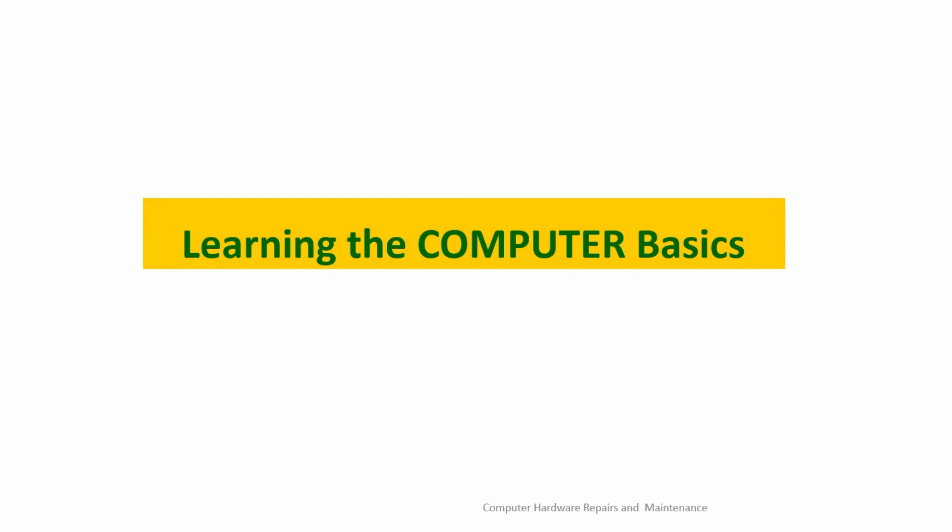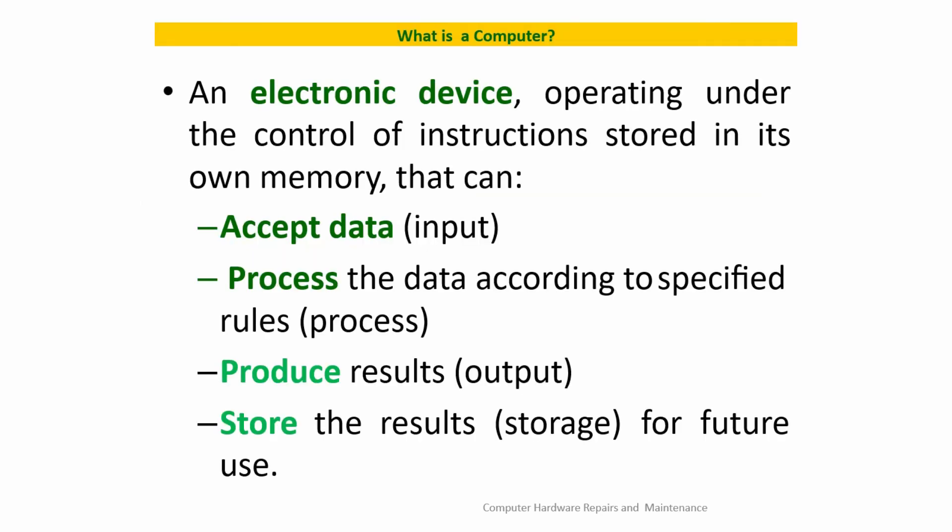Learning the Computer Basics. We will start by defining a computer. A computer is an electronic device operating under the control of instructions stored in its own memory. A computer performs only four things: number one, accept data as input; it will process the data according to the specified rules, which are the programs; it will produce the results, which is the output; and lastly, it will store the results as storage for future use.